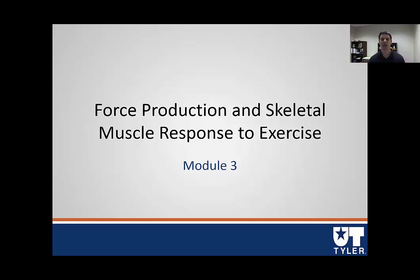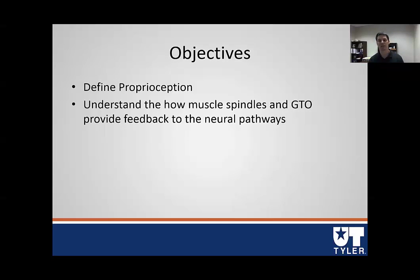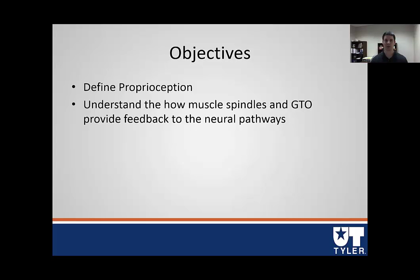The first thing we're going to start today is proprioception. The objectives for this brief section—only a few slides—are that you need to be able to define proprioception, and second, you need to understand how muscle spindles and GTOs provide feedback to neural pathways and how they are able to control muscle length through their sensory pathways.